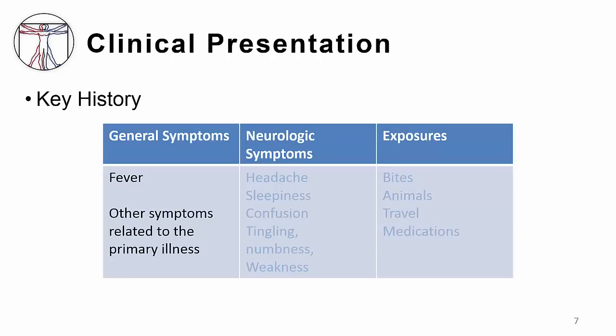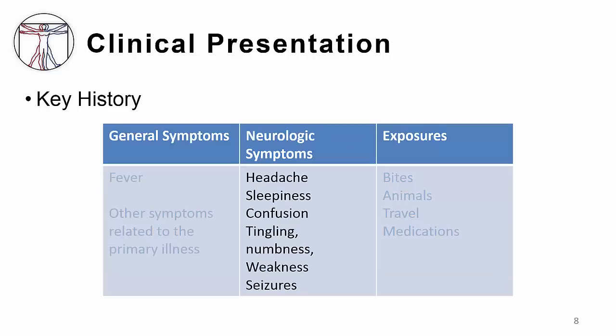When a patient comes in with aseptic meningitis, you cannot distinguish them from someone who has bacterial meningitis. They have fever and other symptoms related to the primary illness like diarrhea, cough, or runny nose. They have neurologic symptoms: headache, which is often diffuse, sleepiness, and confusion. They may have focal neurologic symptoms such as tingling, numbness, or weakness in their arm or leg. They may also present initially with seizures, especially if they have encephalitis.